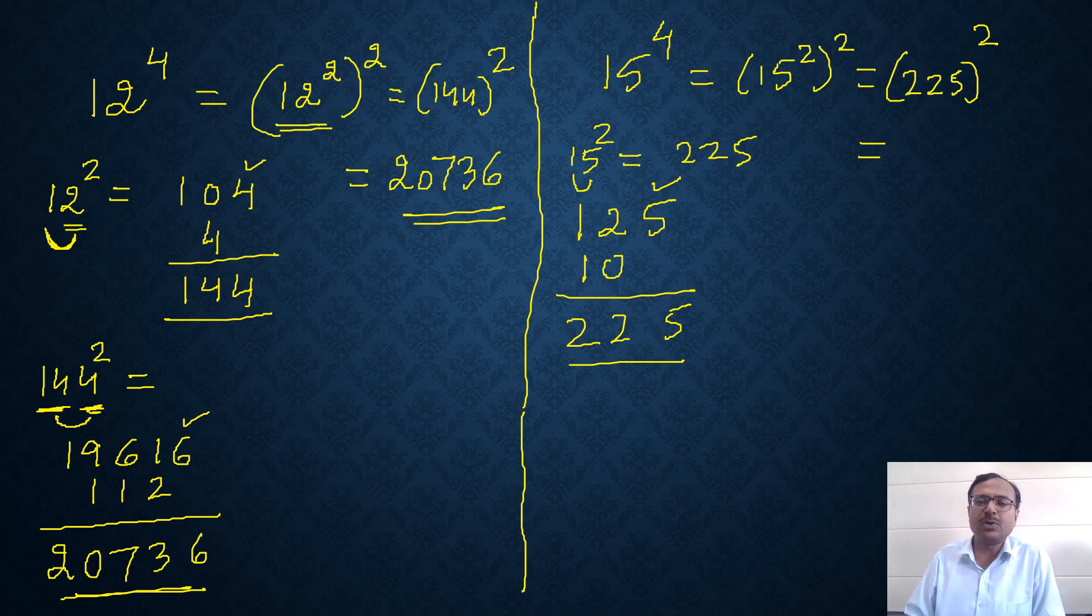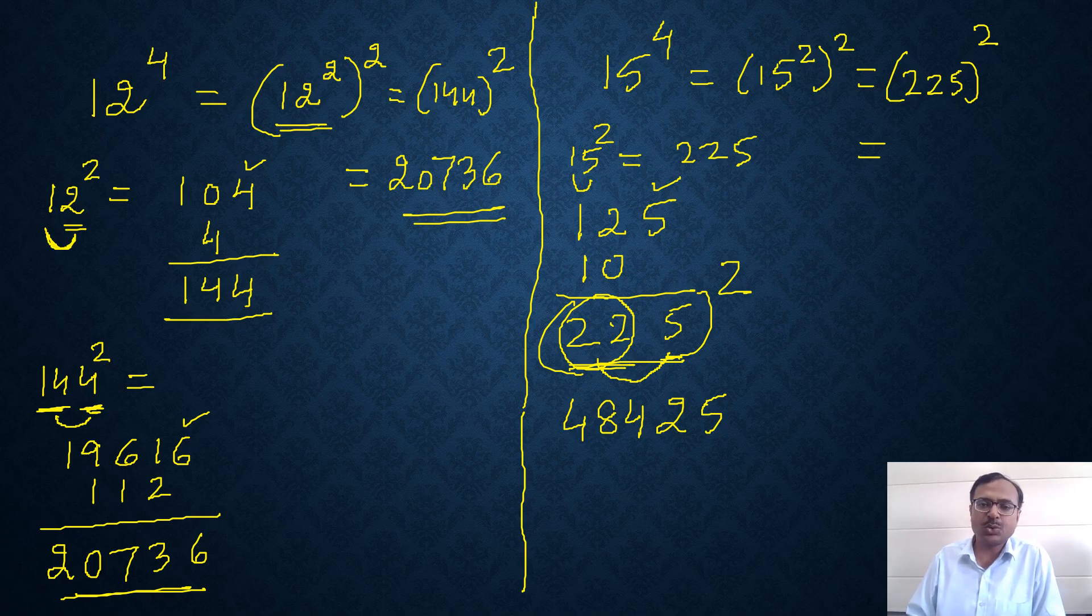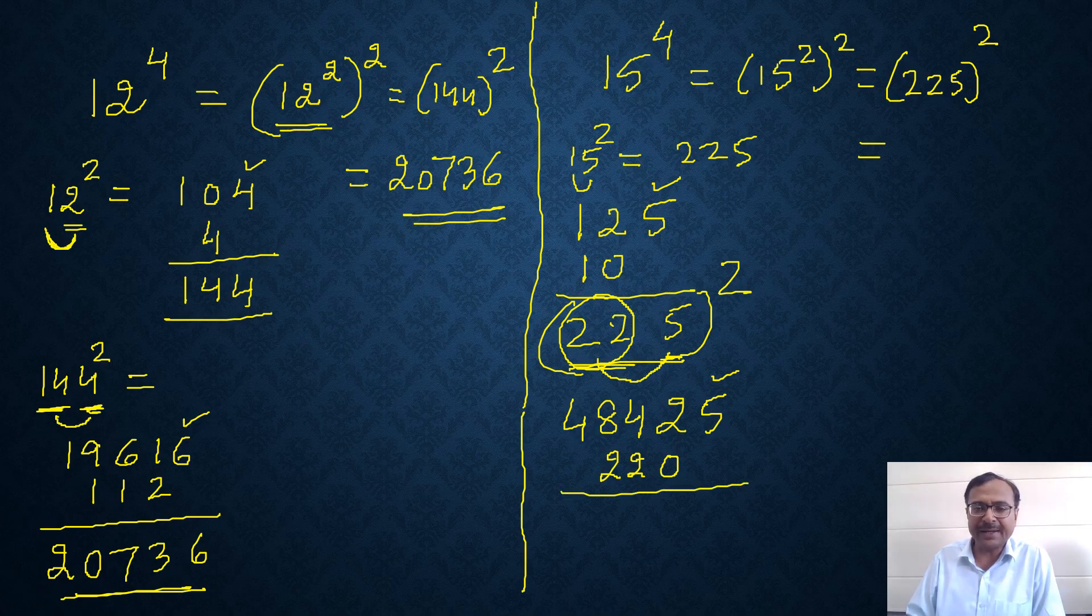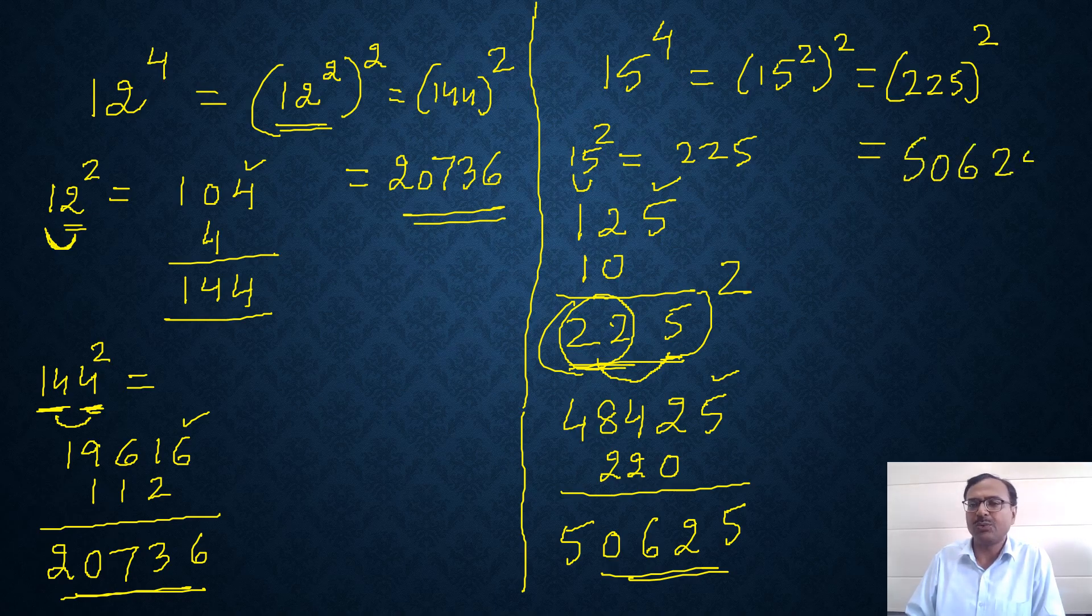So I have to do 225 whole square now to get my answer for 15 raised to power 4. So 225 whole square, if I have to find this square, then I'll consider 22 as the first number and 5 as the second number. 22 square I know is 484, and 5 square is 25. 22 into 5 is 110, the double of that is 220, which I will write like this because I have to leave one digit from the right hand side, and then add vertically. 5, 2, 6, 0, and 5. And there we go, the answer for 15 raised to power 4 is 50625.